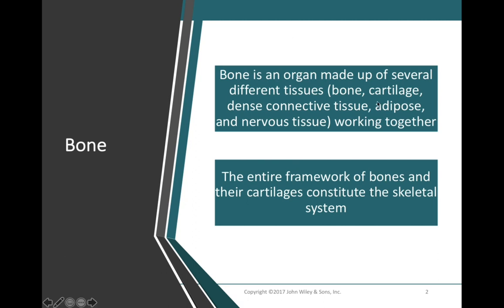Cartilage can be found as part of bone — at the ends of our long bones we find cartilage. Inside the long bones we find adipose tissue, referred to as yellow bone marrow. We also see nervous tissue and epithelial tissue in bones; epithelial tissue is found in the blood vessels coursing through bones. Bone has a very rich blood supply with lots of blood vessels found within it. Bones form the framework of our bodies, giving structure and shape.